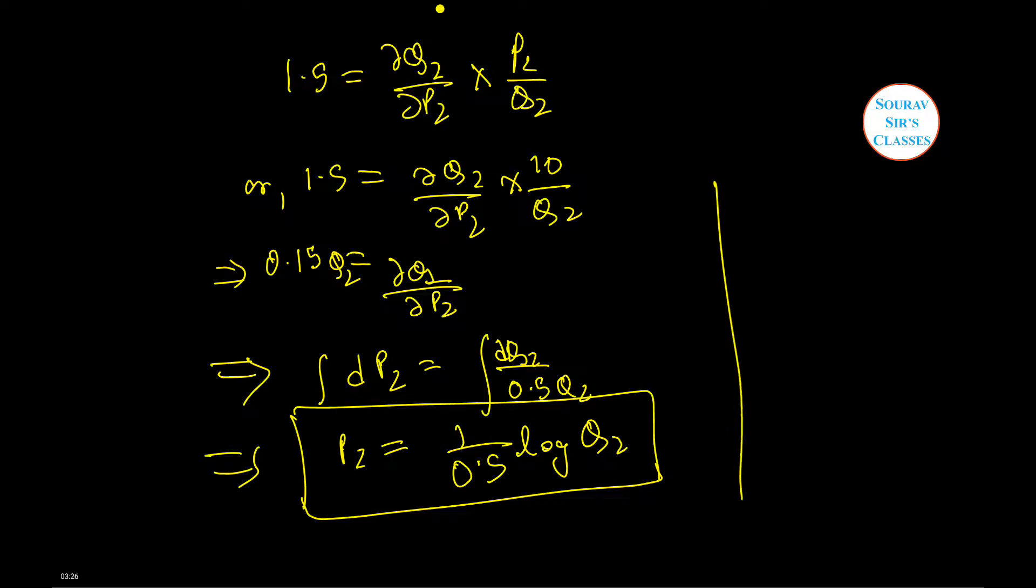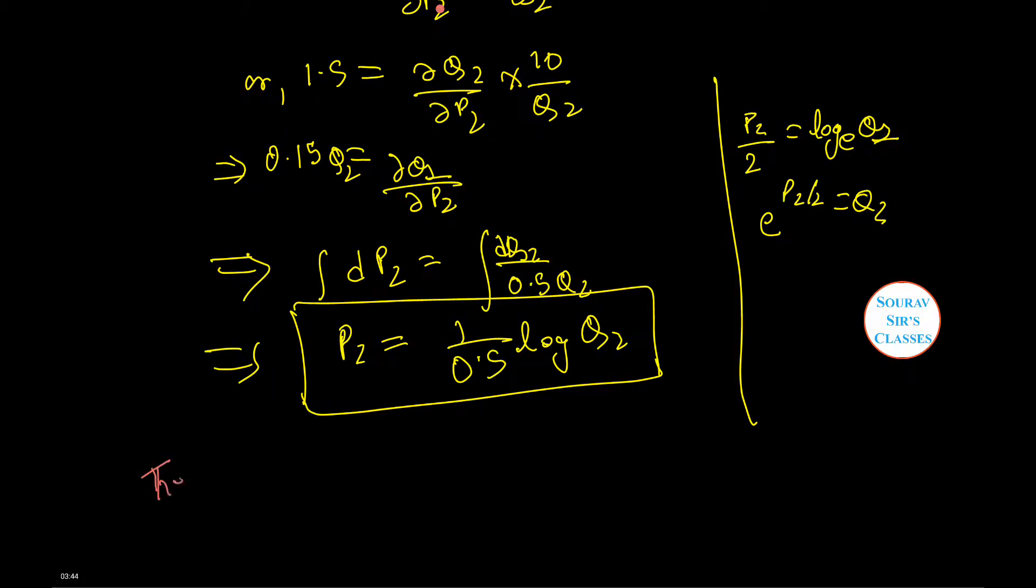Therefore P2 by 2 equals log_e Q2, or e to the power P2 by 2 equals Q2. Hence the demand function for Q2 is Q2 equals e to the power P2 by 2, and this is our answer.